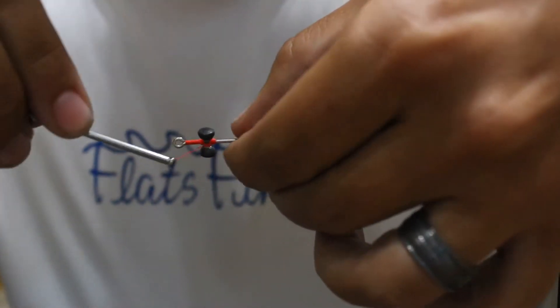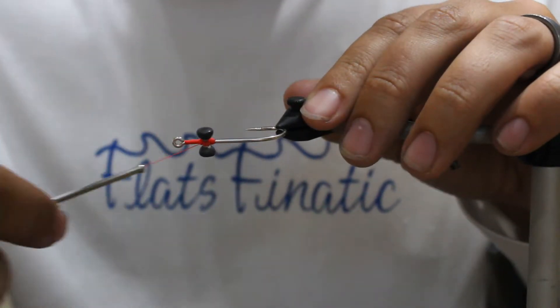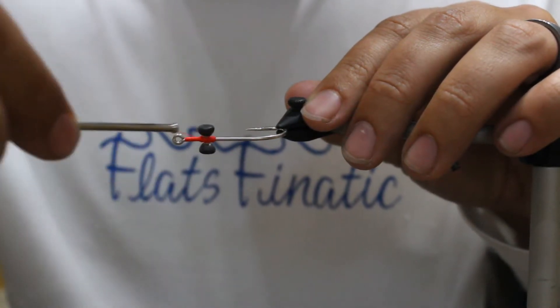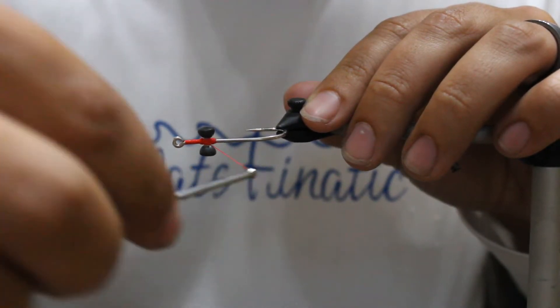What you're trying to do with that is just get it evened up. Now we're going to do our figure eights. That just goes over the middle, under the dumbbell.